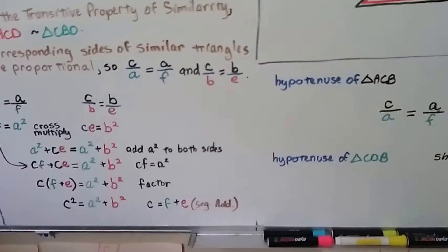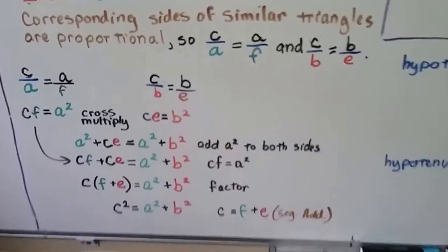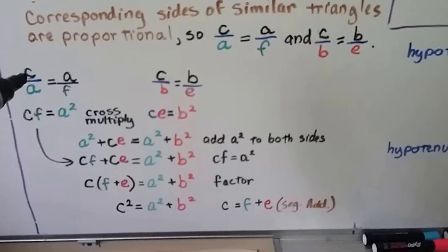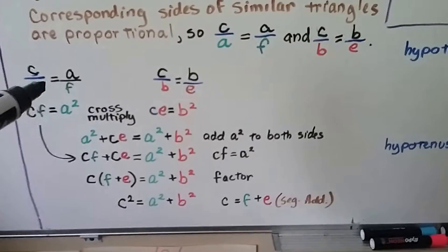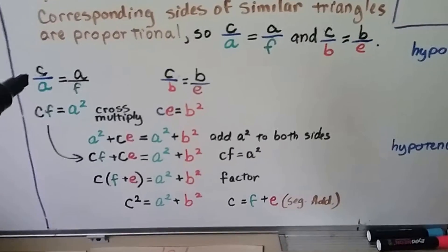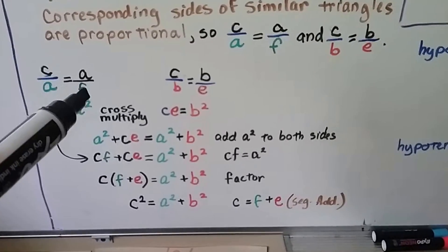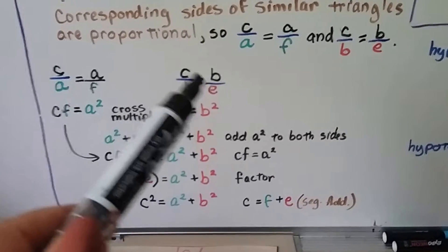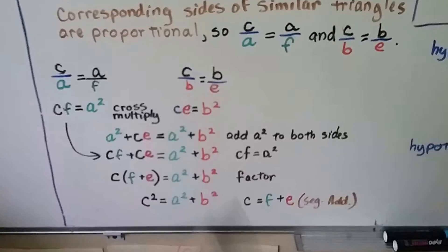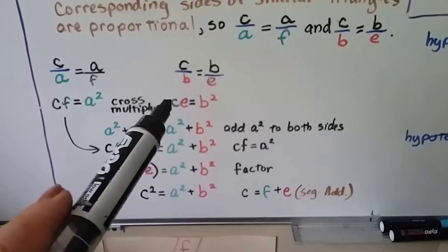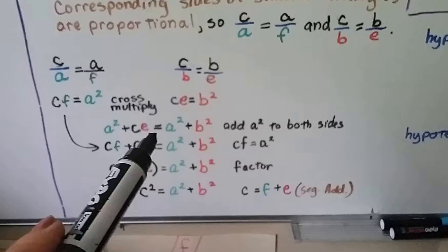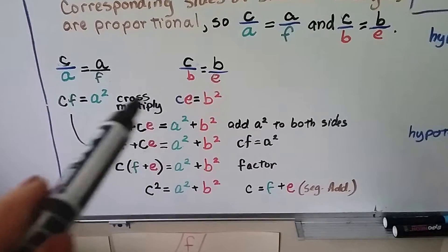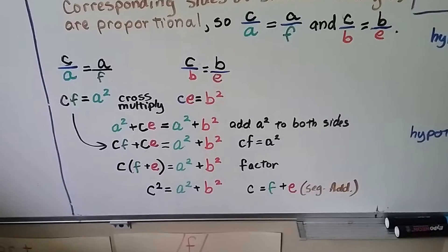So because we have these, we've got it here and we've got it here, I split them apart, we can do cross multiplication. We can do CF is equal to a squared. And for this one, we can do CE is equal to b squared. So this CE equals b squared, we can add an a squared to both sides of the equal sign. See that?